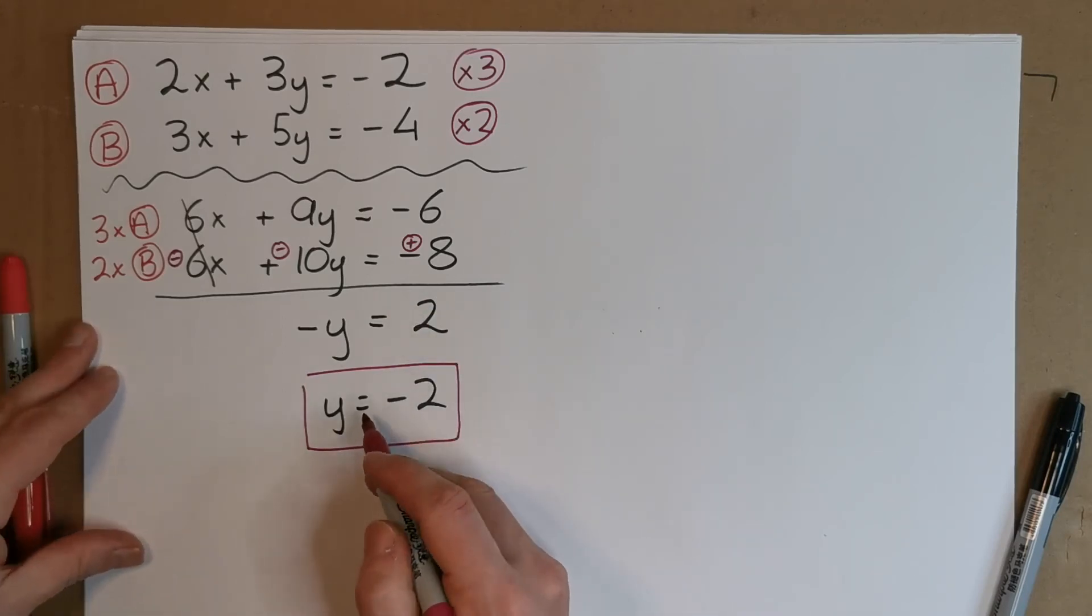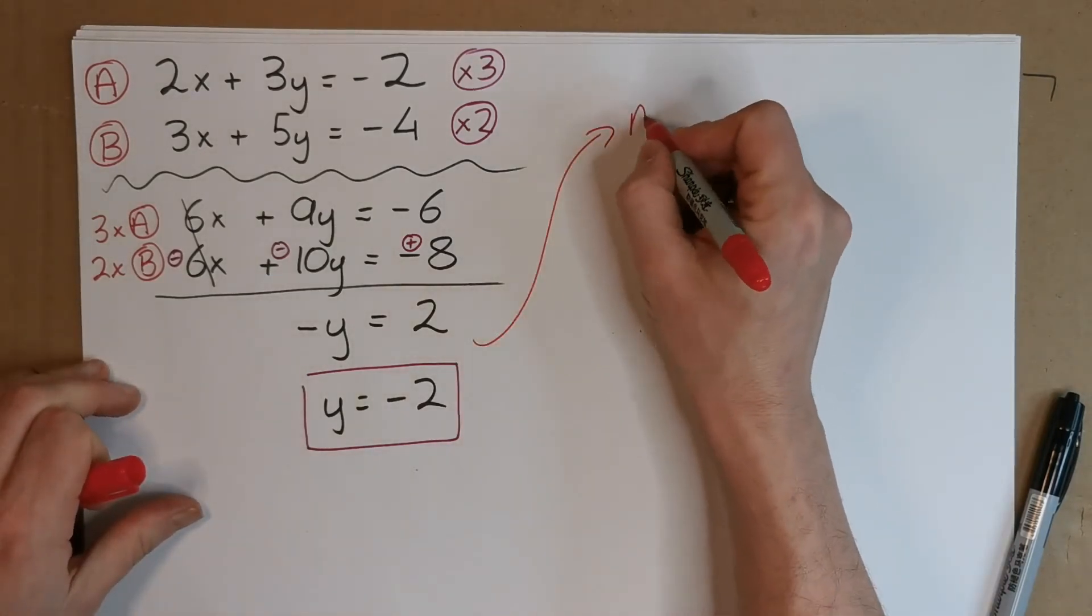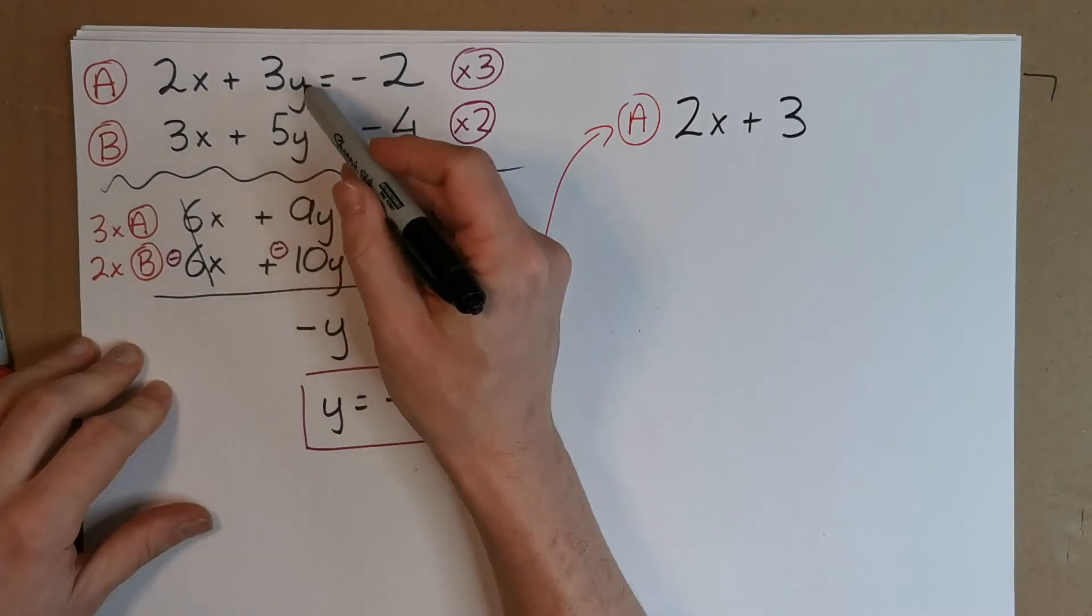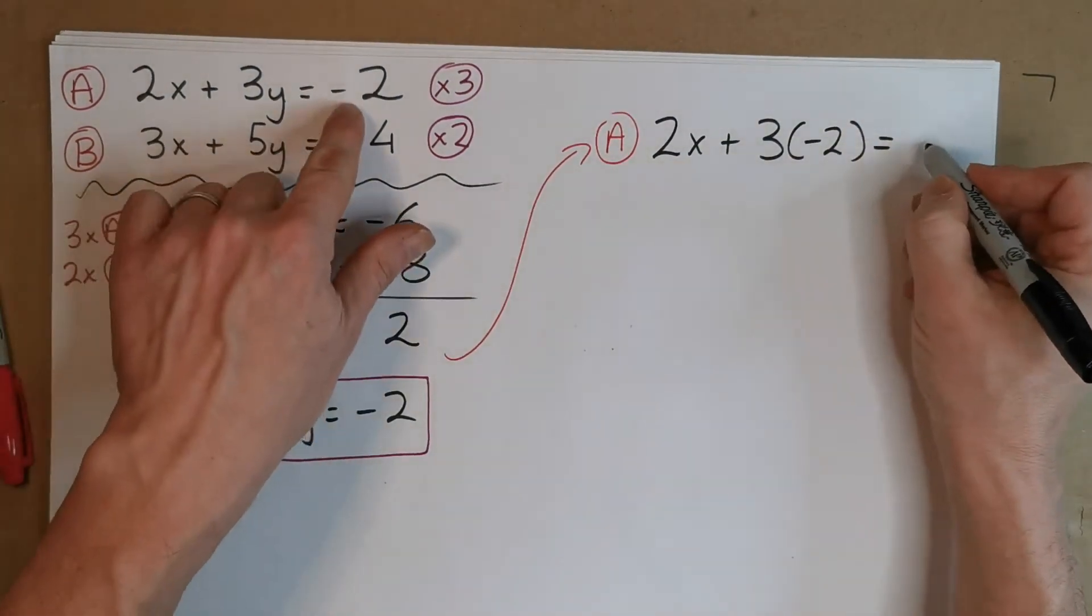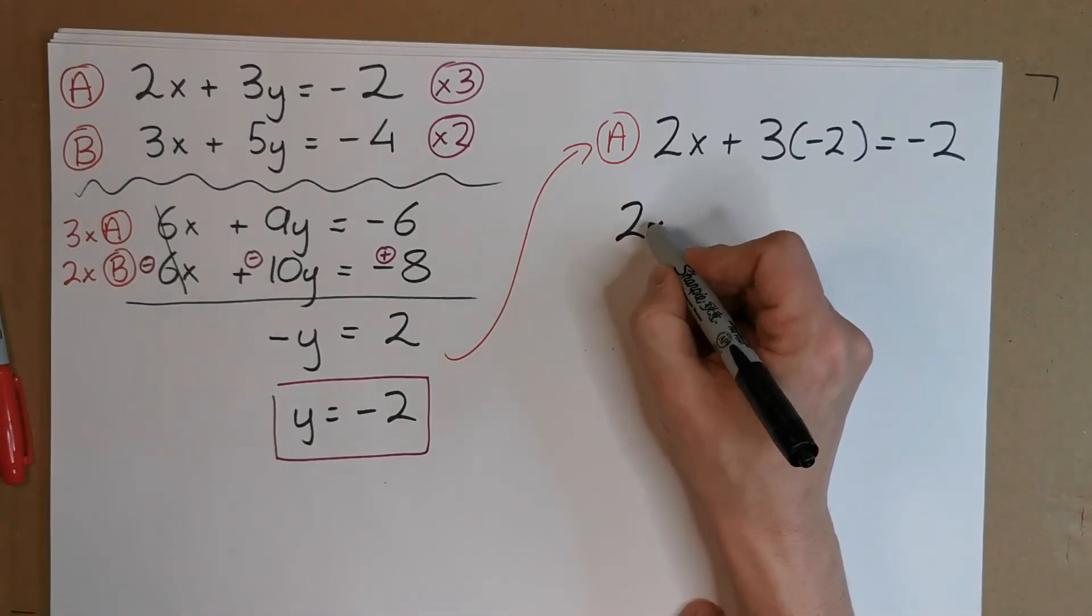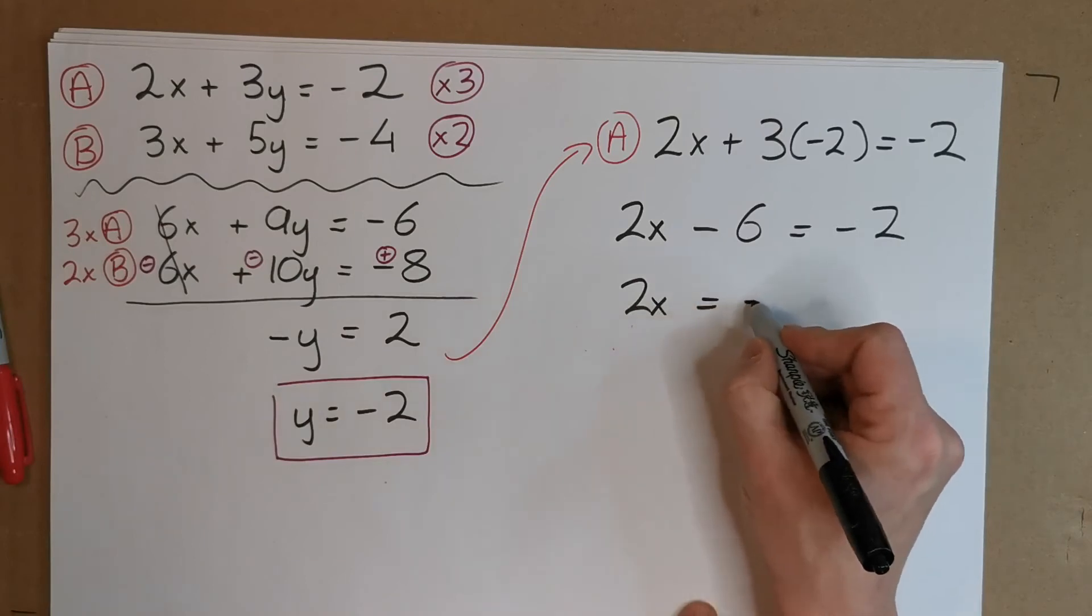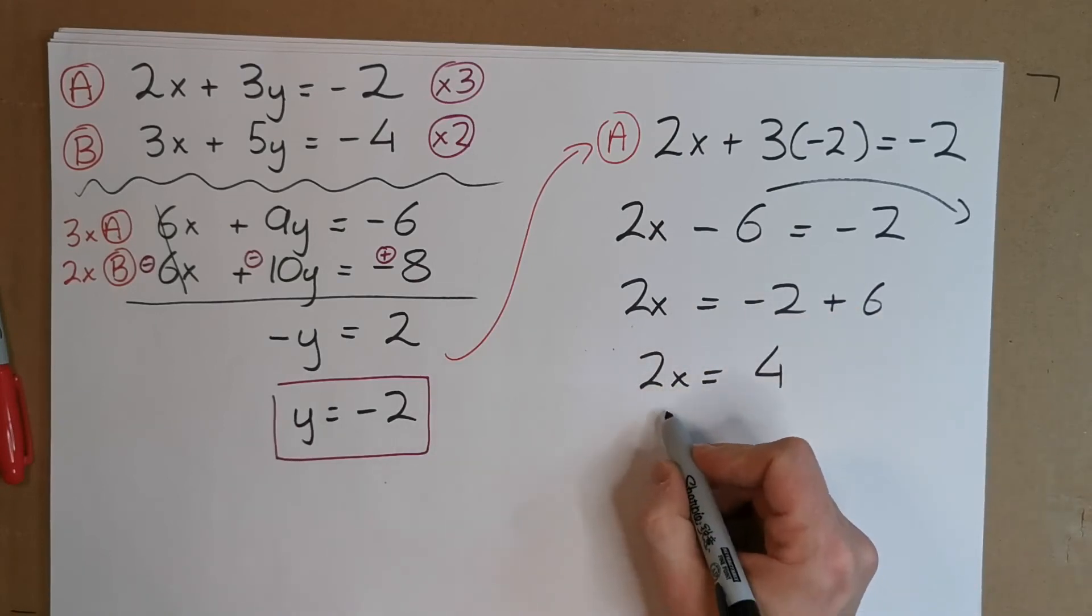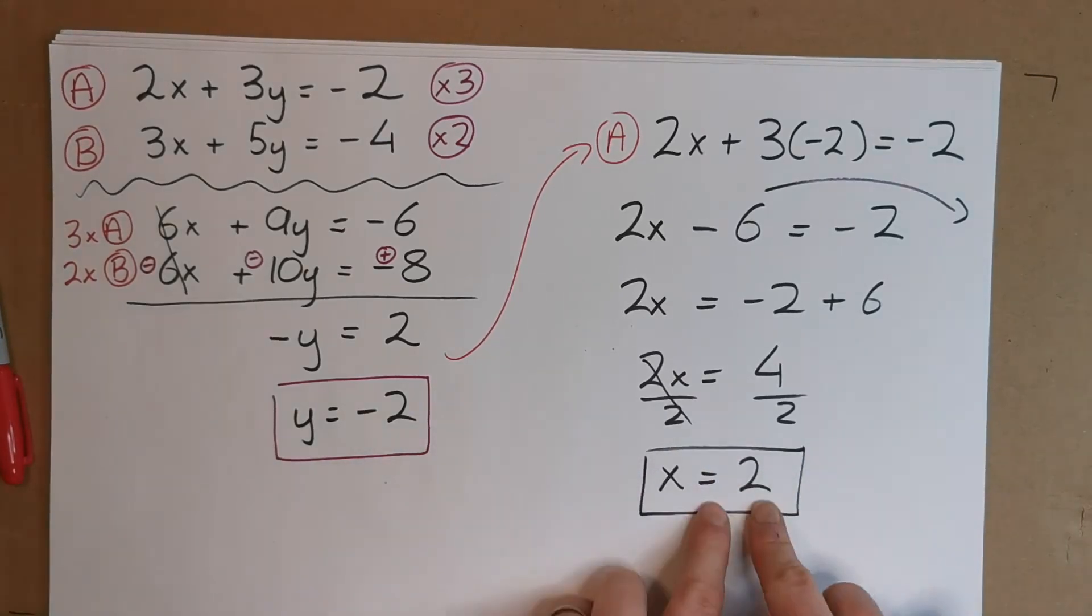Now, we're back to the same method as the start. We're going to put this value for minus 2 back into an original equation. So, let's write out equation A there again. Equation A is going to be 2X plus 3 times - now, instead of Y, we've found out that Y is minus 2. So, in brackets, minus 2. And then that's equal to minus 2. It's important that we use an original equation for this. This is 2X, 3 times minus 2, that's minus 6, equals our minus 2 out there. 2X equals minus 2 - when you bring this guy over, it becomes a plus 6. 2X equals minus 2 plus 6, that is a plus 4. We'll divide both sides by 2 to get rid of that 2 there. X equals 4 over 2, which is 2. So, that's our answer. X equals 2 and Y equals minus 2.